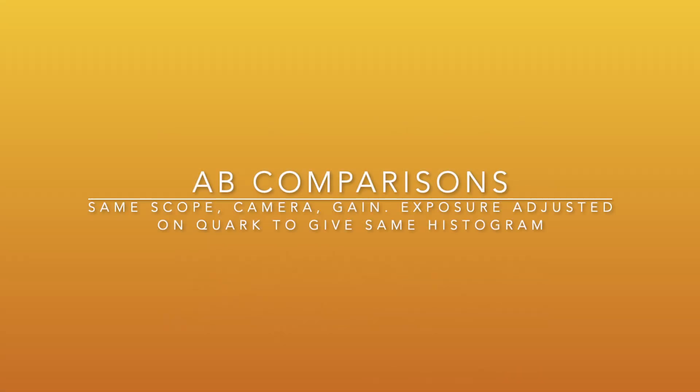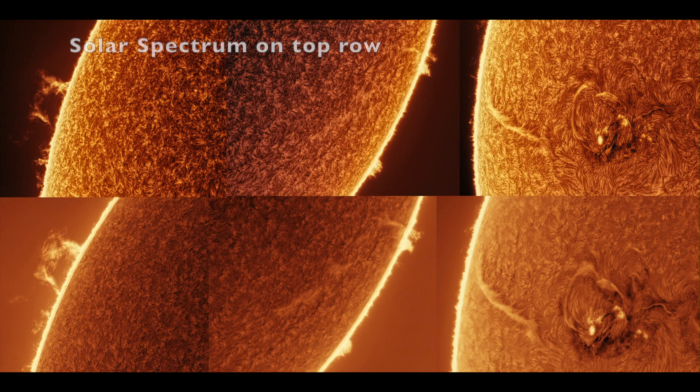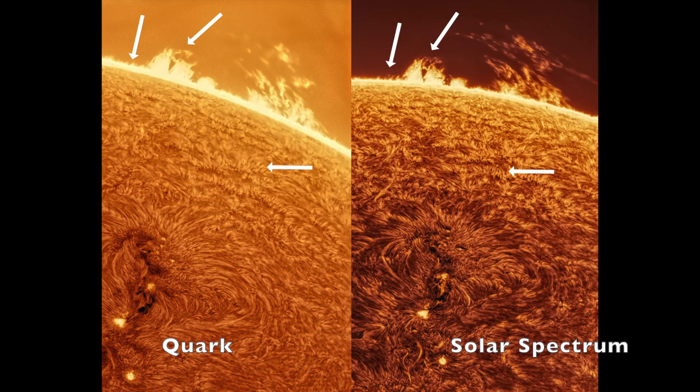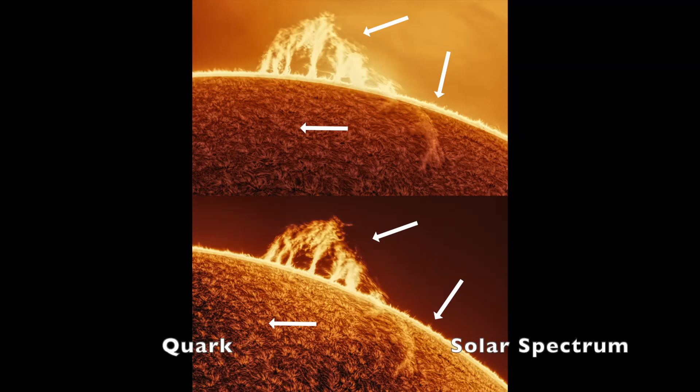Let's show some real-world brightness comparisons. The brightness differences come from having a hard-coated blocker in the Solar Spectrum, having better centering, having higher transmission throughput, and having more stability over time.